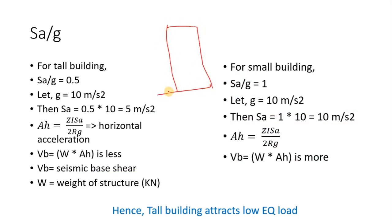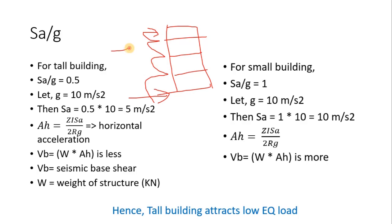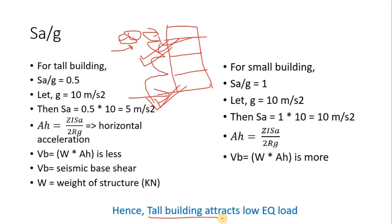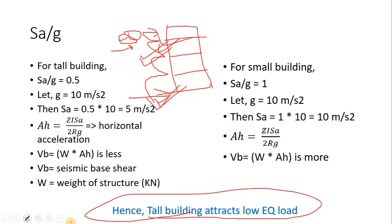The seismic base shear acts at the base of the building and is distributed proportionately across each story. More base shear means more earthquake load; less base shear means less earthquake load. Therefore, tall buildings attract low earthquake load.